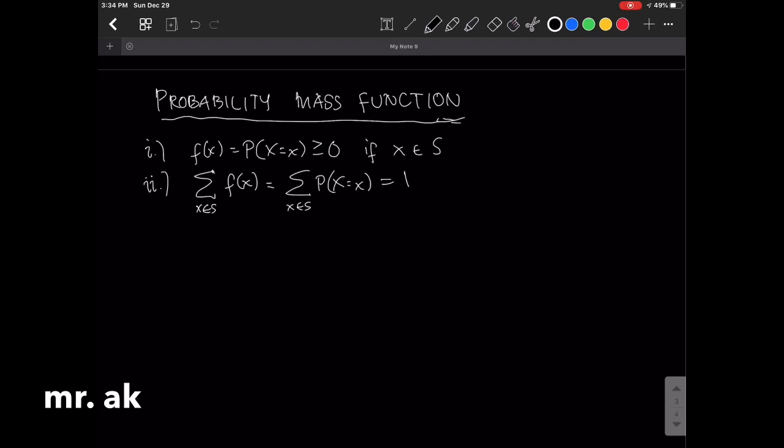Now, the f(x) here, it's a function, right? But it stands for the probability. The probability f(x) is the probability that the random variable, big X, is equal to small x. That's why these notations, these two notations, are interchangeable. Because this f(x), as I've said, is the probability that the big X takes on the value of the small x.